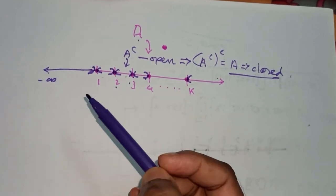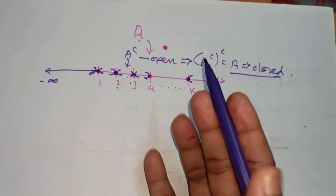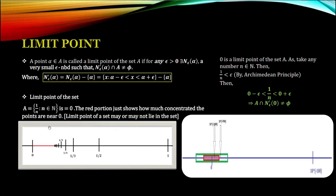Now we have reached the point where we can talk about limit points and define closed sets by limit points. A point α is called a limit point of a set A if, for any ε > 0 (very, very small but positive), there exists a neighborhood of α — a very small ε-neighborhood — such that the deleted neighborhood of α intersected with A is non-empty. This means the deleted neighborhood of α has some point in common with A.